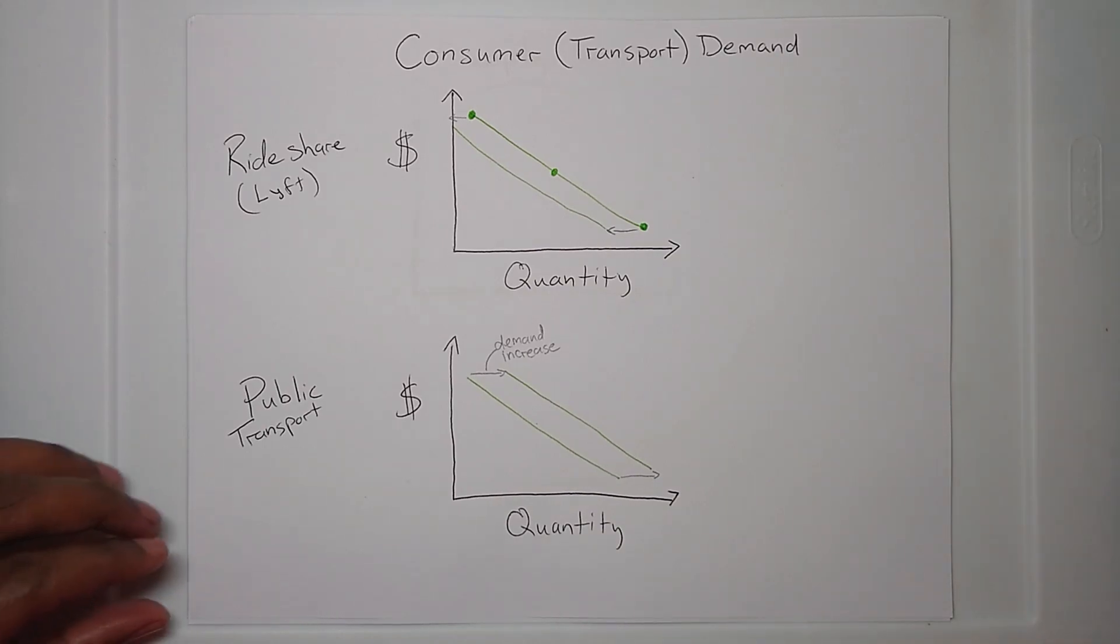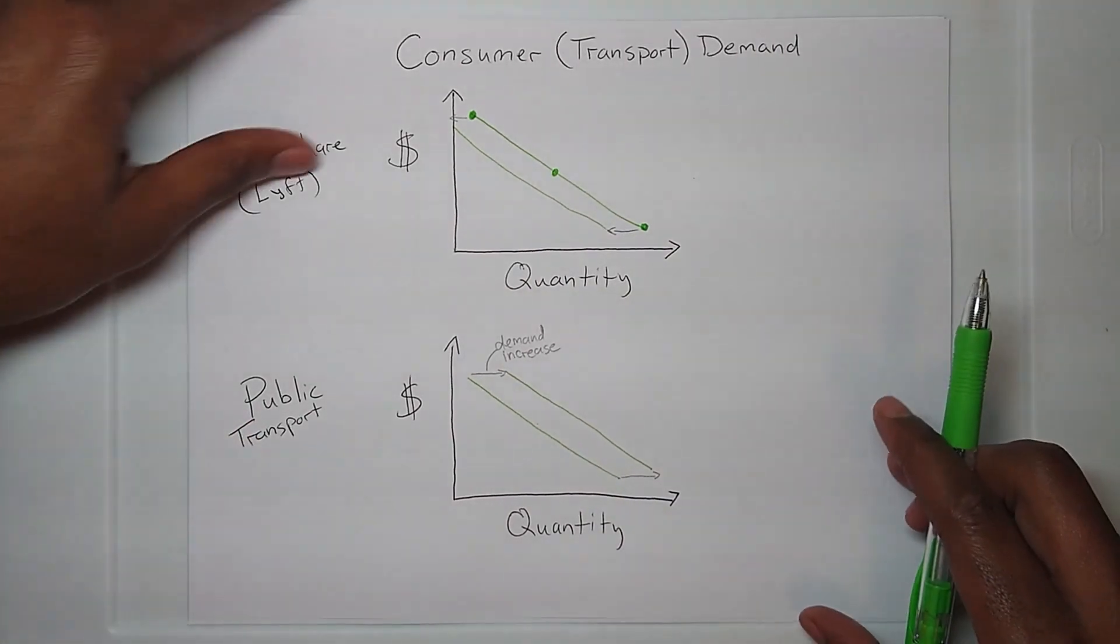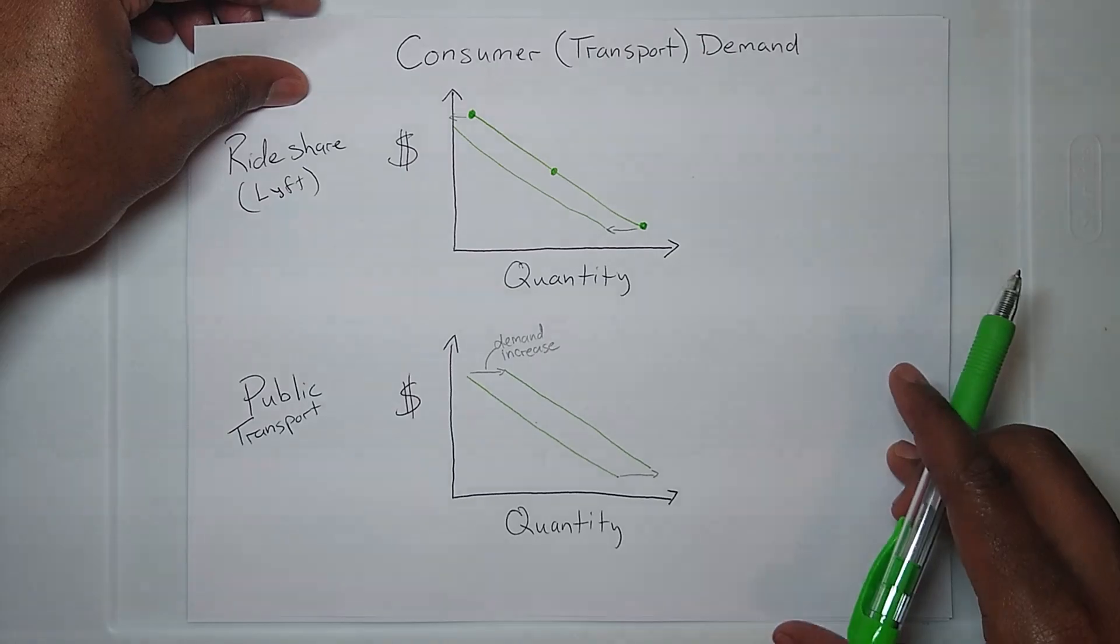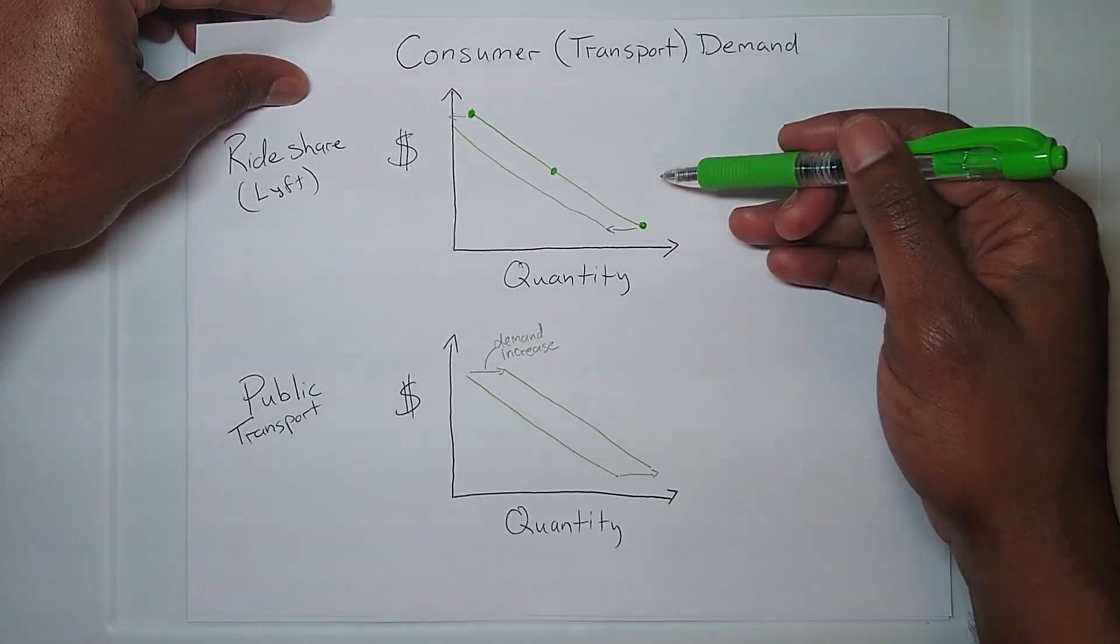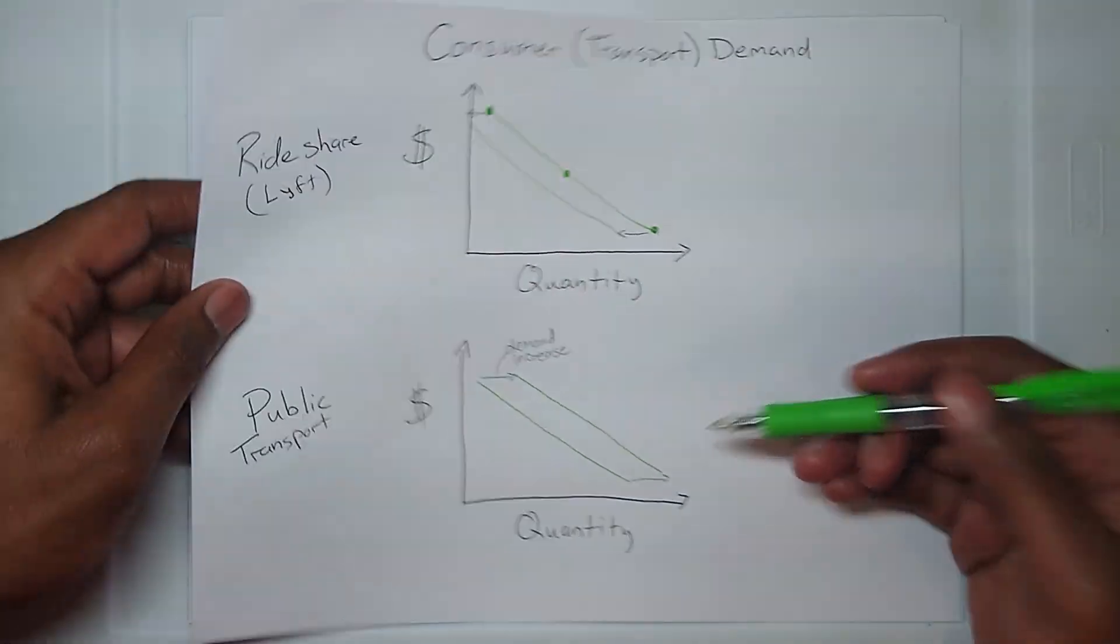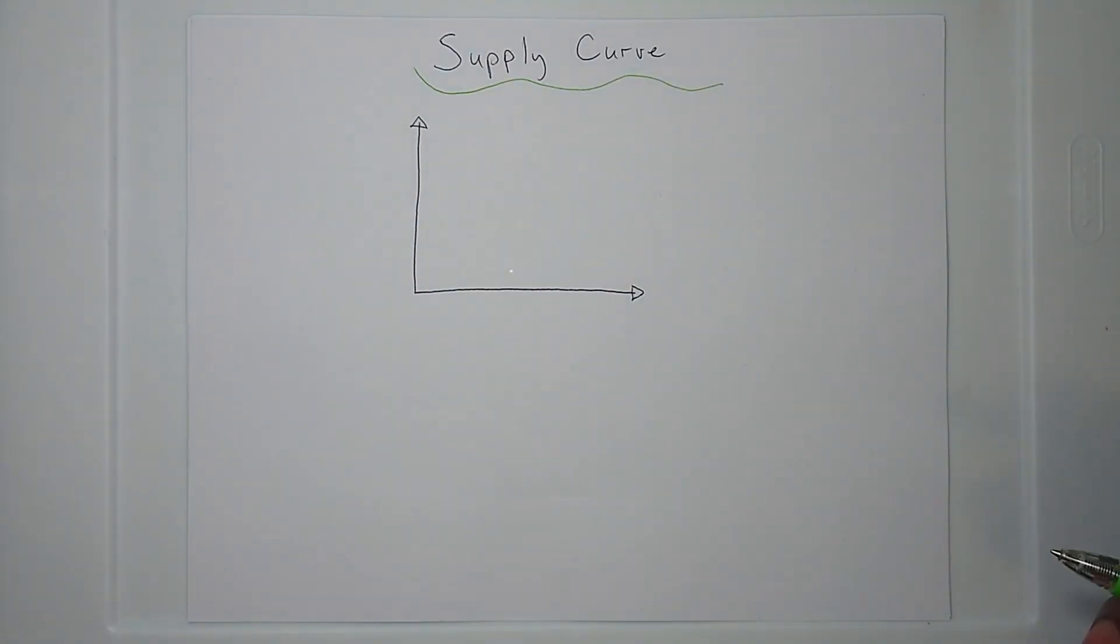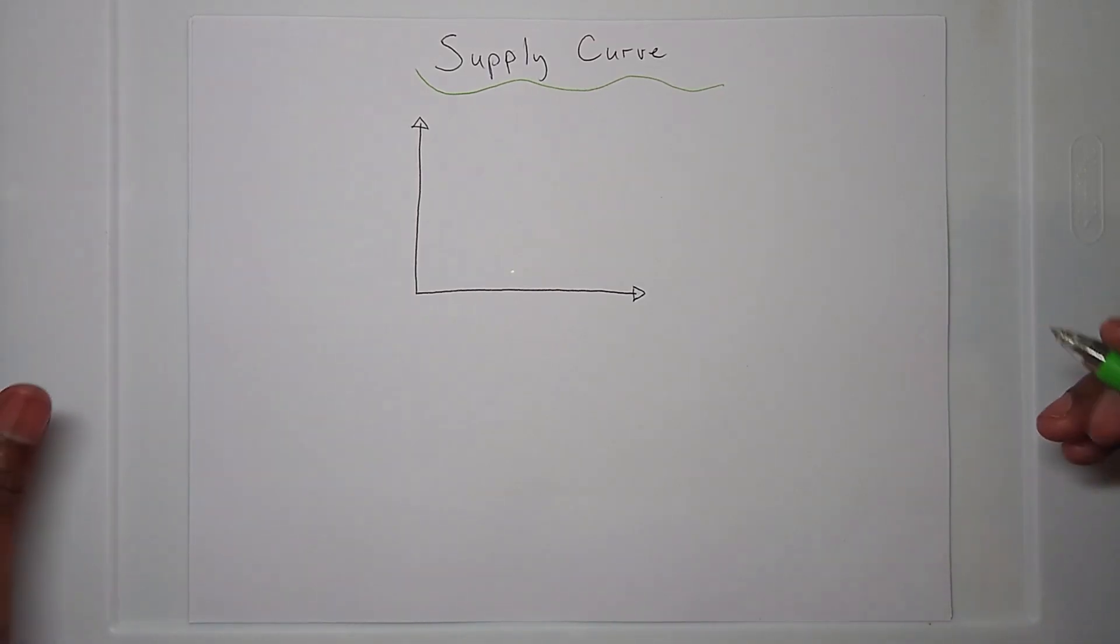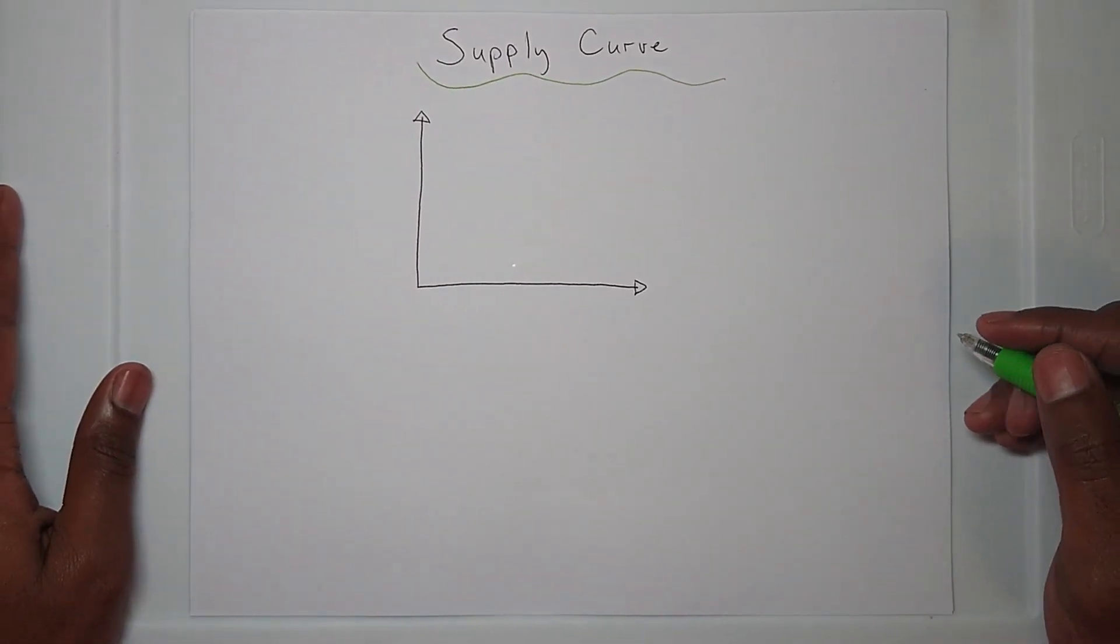Sometimes it's just not that simple. Not only do you have to look at the demand or the competition between two types of transportation for that demand, but you also have to look at the supply. As I tell my kids, just because you want it doesn't mean it's going to exist.